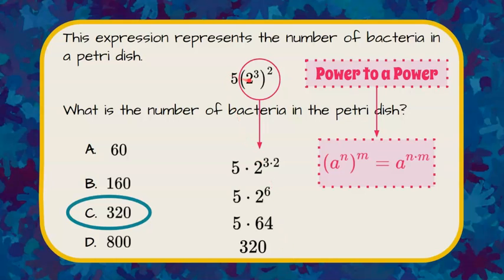You could have also done two cubed is eight, so in parentheses two cubed is eight, then eight squared is 64, and five times 64 is 320.